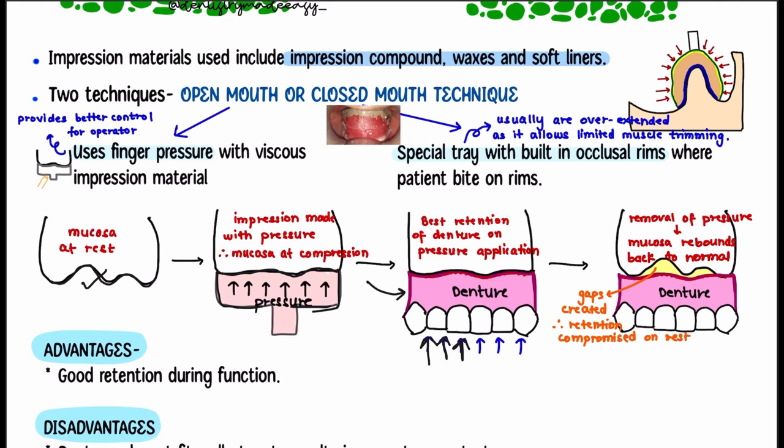However, since the mucosa is not under pressure for 24 hours, as soon as pressure is removed and the mucosa returns to its original position, there will be gaps created between the denture and the mucosa at rest. This compromises retention at rest, and that is the major drawback of mucocompressive theory.